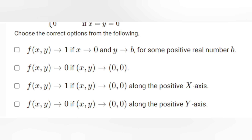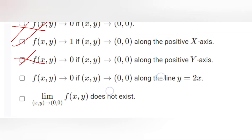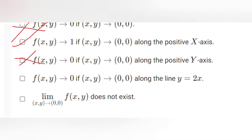The correct options are: option one is true (limit = 1); option two is false (limit does not exist, not 0); option three is true (value is 1); option four is false (value is 1, not 0 as stated); option five is false (value is 3/√5, not 0); option six is true (limit does not exist).